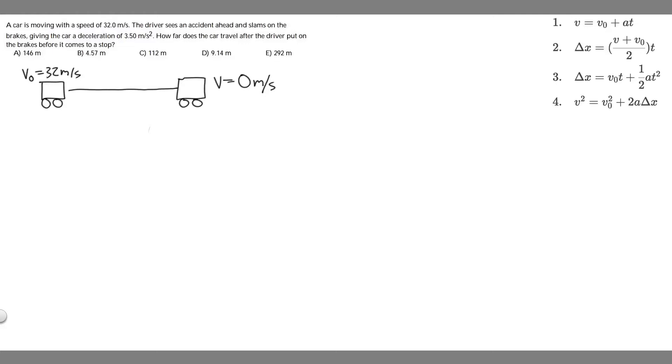In this problem, we're told a car is moving with a speed of 32 meters per second. The driver sees an accident ahead and slams on the brakes, giving the car a deceleration of 3.5 meters per second squared. How far does the car travel after the driver puts on the brakes before it comes to a stop? The first thing you always want to do is draw what's going on.